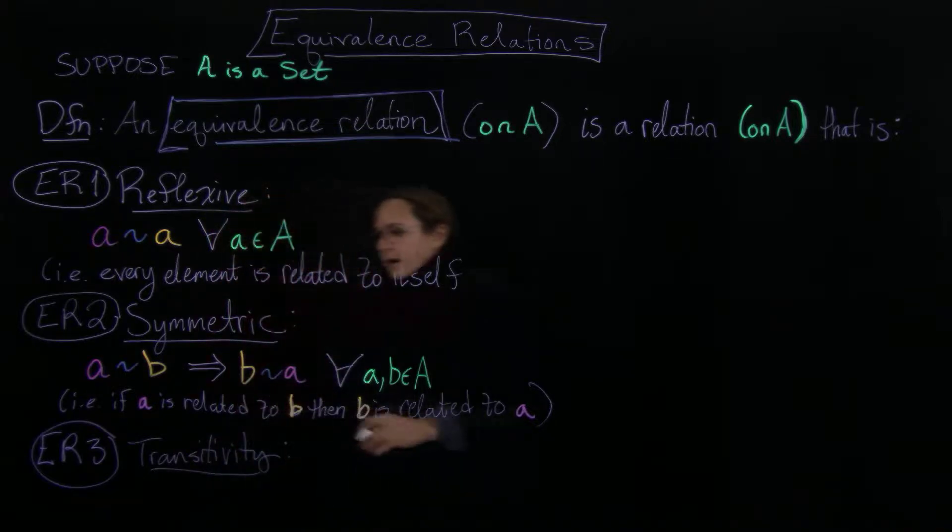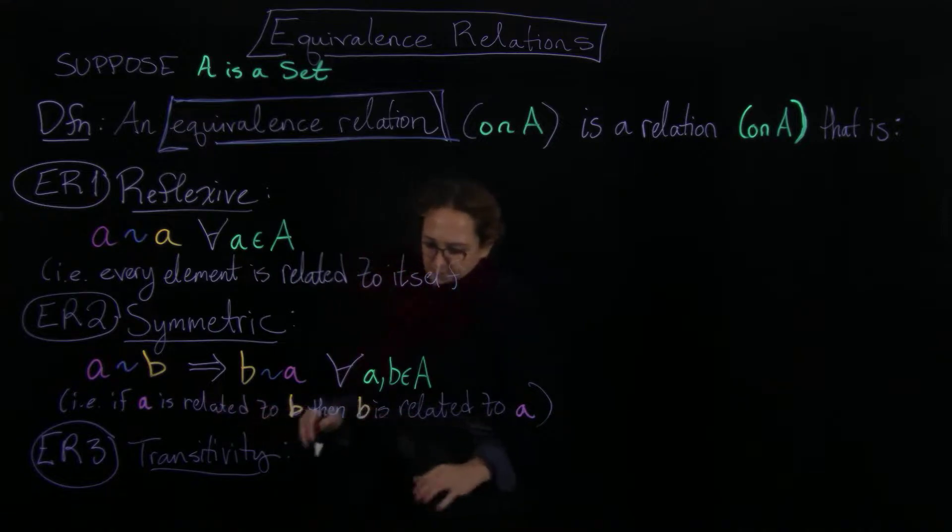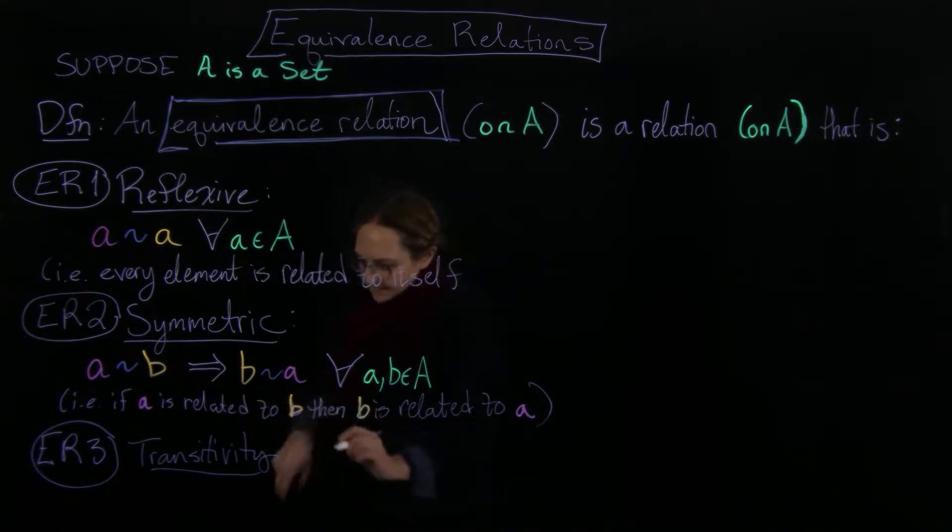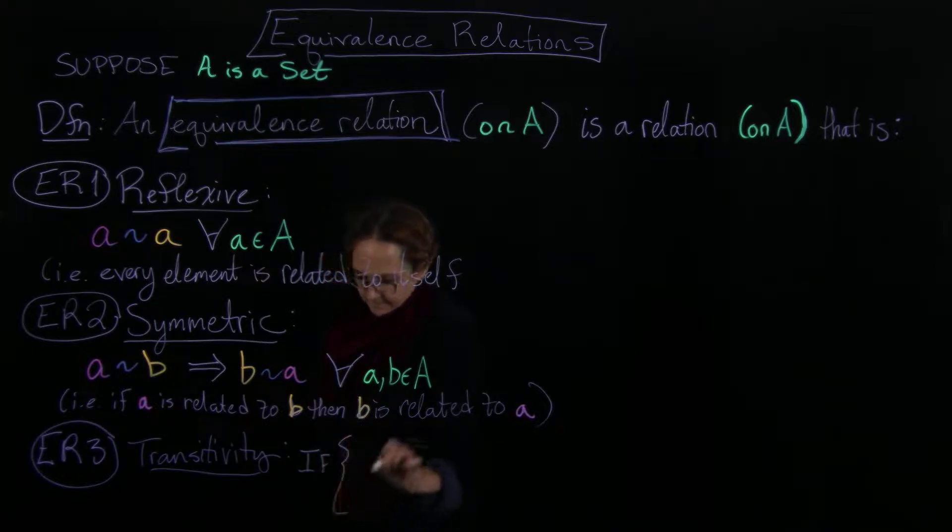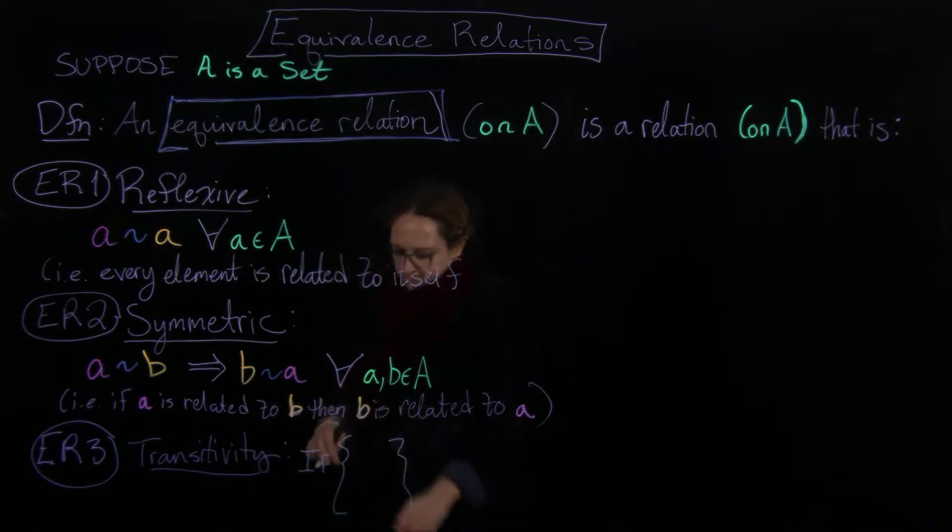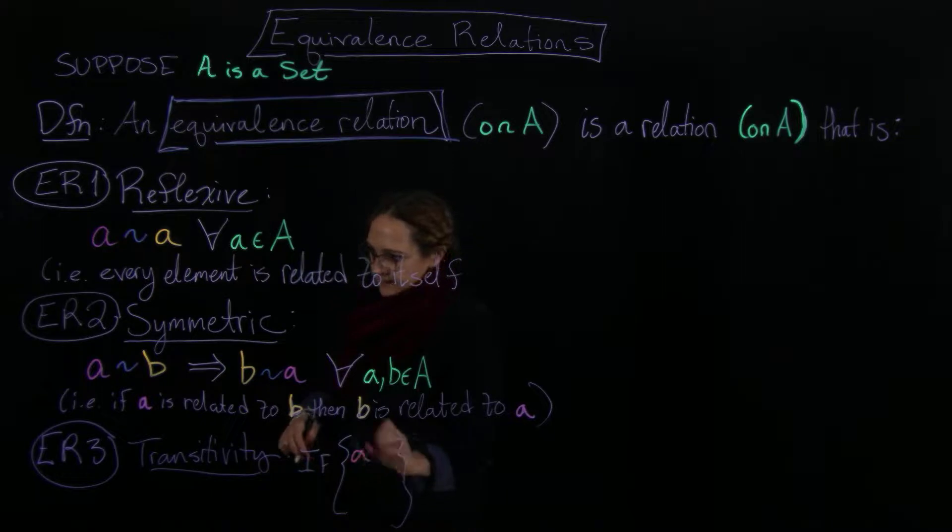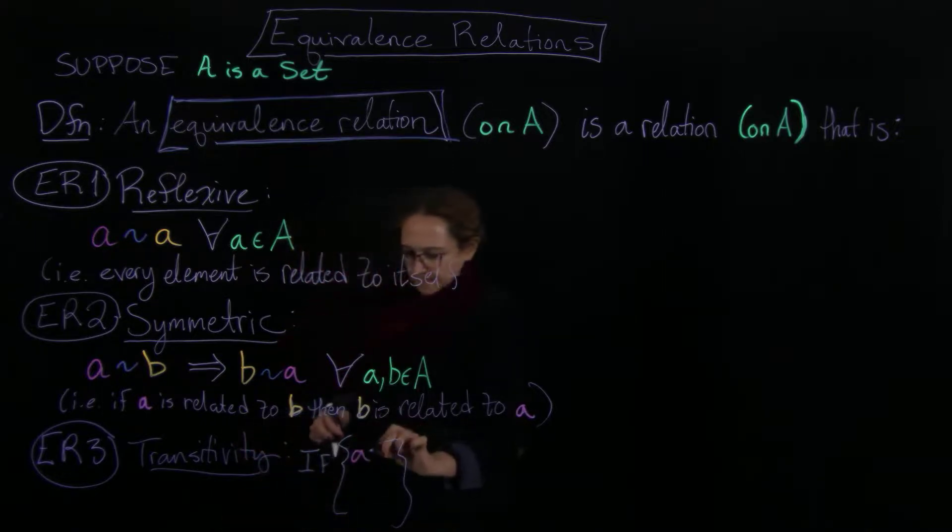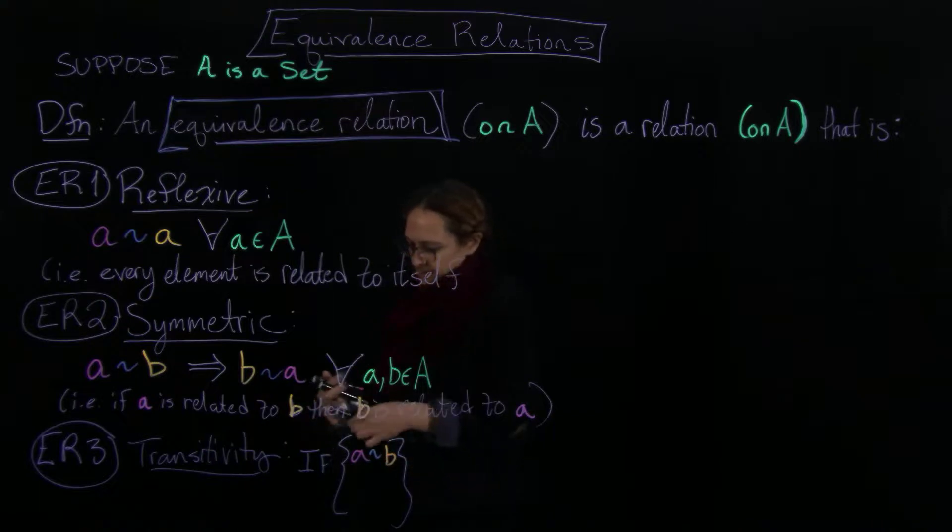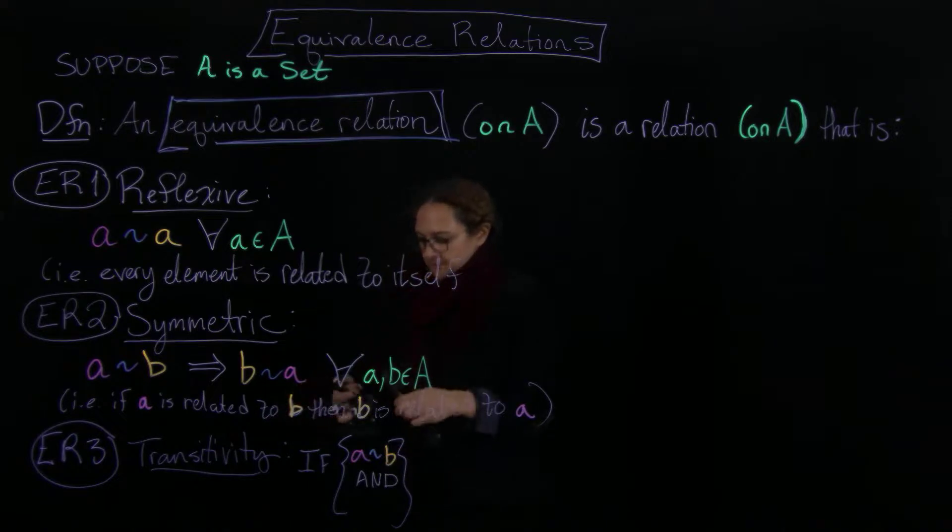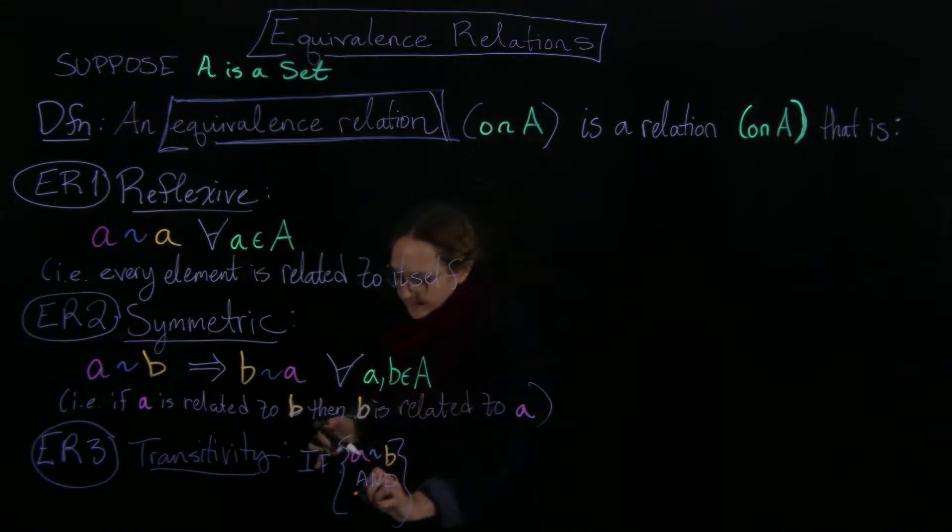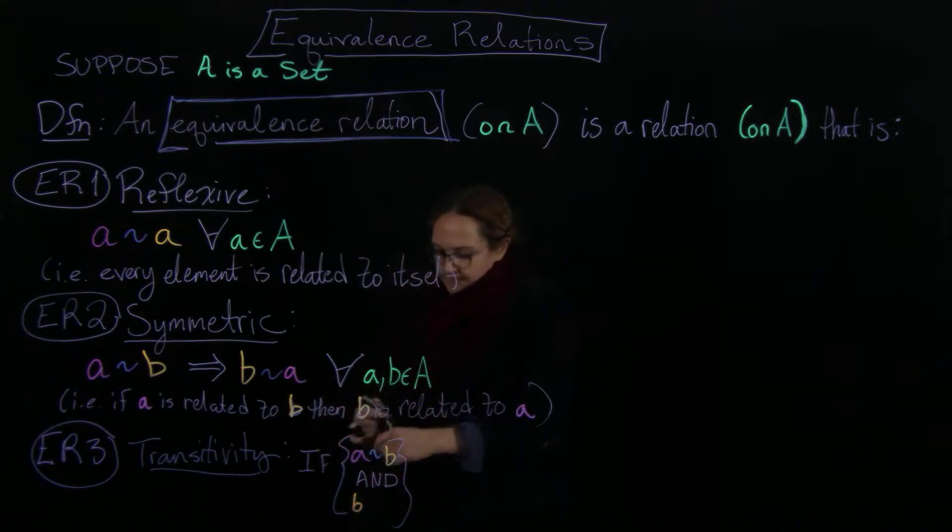Which is that if, so if you have that, so if, let's go like this. So if you have that A is related to B, and you have that, we're kind of running out of colors, that B is related to,